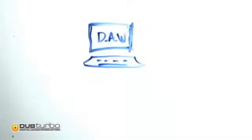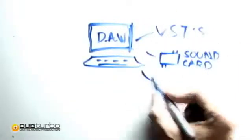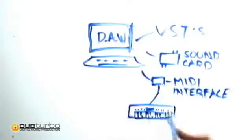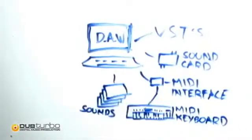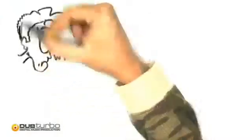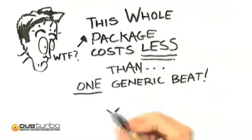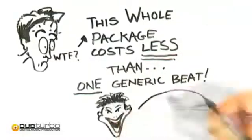Why? What used to cost thousands — meaning a supercomputer, big name DAW software, VSTs, pro sound card, MIDI interface and keyboard, samples and kits, monitors, a mixer, wires, and more — is now all available for less than the cost of just one average royalty-free beat or kit.